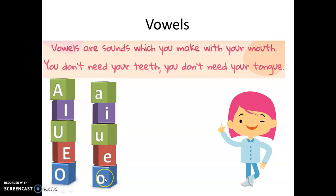E, O. See, you don't need your teeth and you don't need your tongue to make the sounds. So the letters A, I, U, E, O are vowels. Other than that are consonants. Let's take a look.